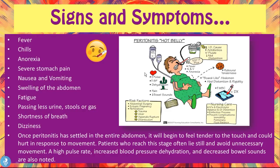This image shows the signs and symptoms of peritonitis: elevated pulse rate, increased blood pressure, dehydration, pain, and decreased bowel sounds, as well as fever, nausea and vomiting, and anorexia. Something a doctor might notice on physical examination is a board-like abdomen, which is a sign showing rebound tenderness and abdominal distention with rigidity.